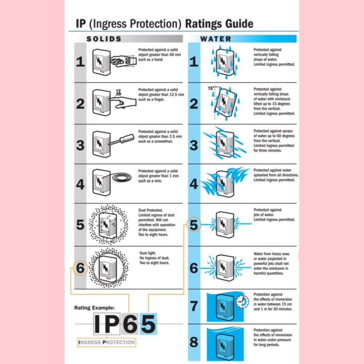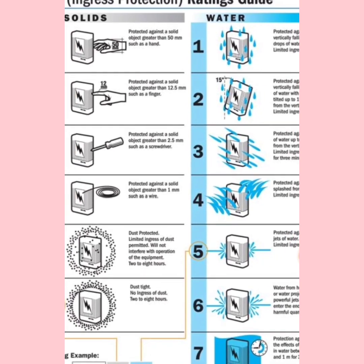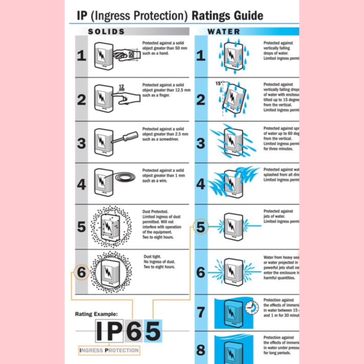Looking at solid protection, the very first number talks about protection against objects having size more than 50 mm — that means protection against your hand. The second number gives protection against objects more than 12.5 mm. For number three it is 2.5 mm, and for number four it is 1 mm. So 12.5 mm means a finger, and 2.5 mm means a screwdriver.